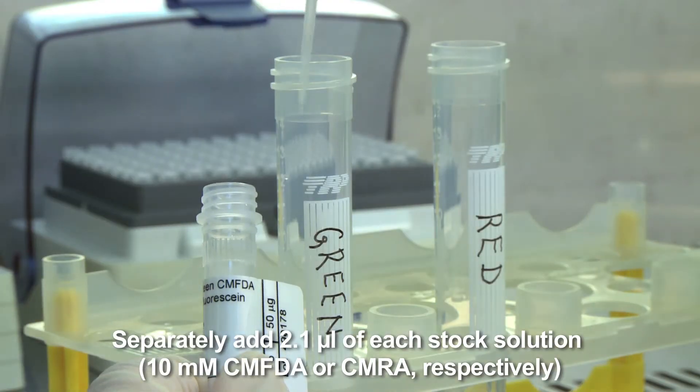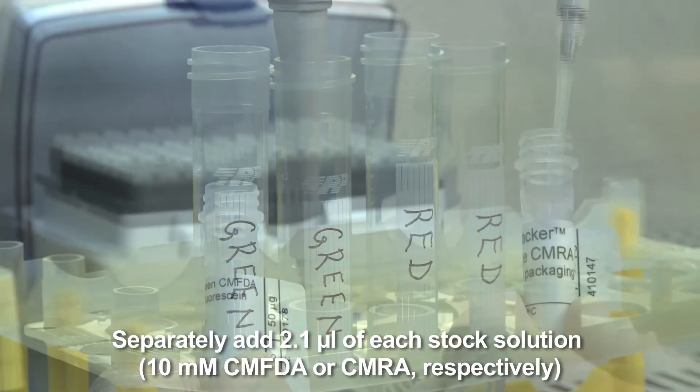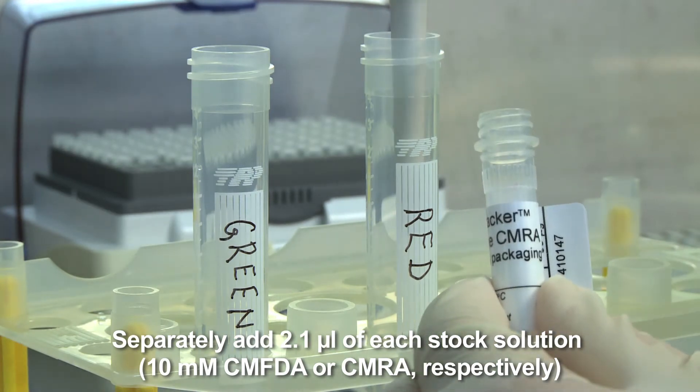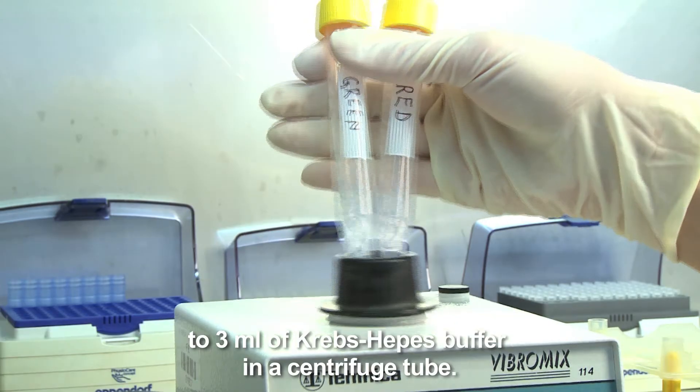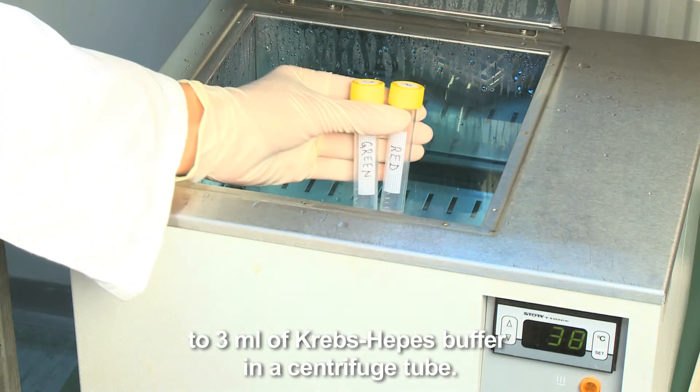Separately add 2.1 microliters of each stock solution, 10 millimolar CMFDA or CMRA respectively, to 3 milliliters of Krebs-Hepes buffer in a centrifuge tube.